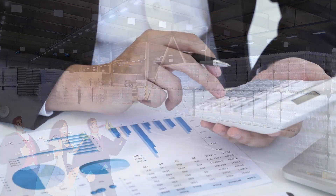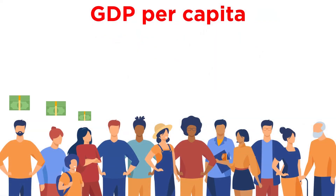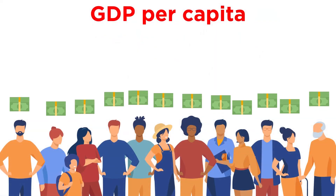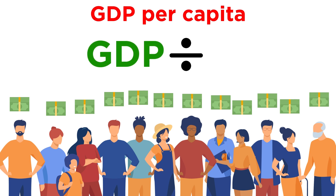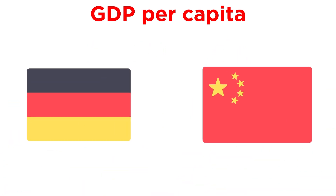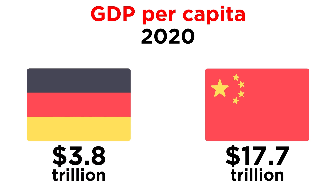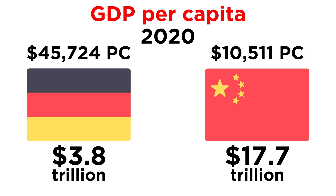One way economists attempt to calculate a slightly more accurate measure of a country's economy is by figuring out its GDP per capita. To get GDP per capita, you just take a country's GDP and divide by its population. To illustrate this difference, let's look at Germany and China. In 2020, China's GDP was 17.7 trillion USD and Germany's GDP was 3.8 trillion USD. However, Germany's GDP per capita was $45,724 and China's GDP per capita was just $10,511 USD.